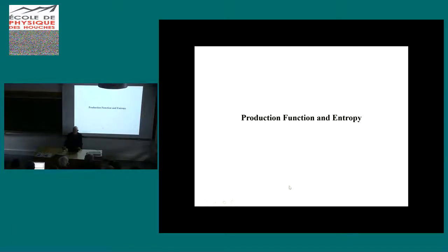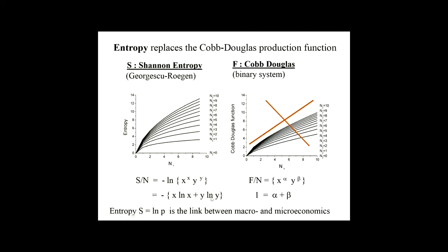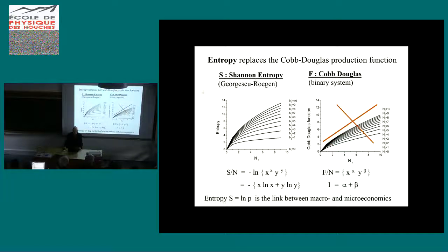Let me say something about the production function entropy. Entropy replaces the Cobb-Douglas function of production. The Shannon entropy is ln x to the x, y to the y, instead of x to alpha, y to beta. The elasticities of alpha and beta are not anymore valid - it's now the function itself that leads to the elasticity. The Shannon entropy x ln x plus y ln y replaces this function. You see this function looks very similar but it's much bigger. The Shannon entropy is the biggest production function, much bigger than the Cobb-Douglas function.